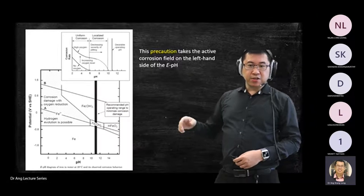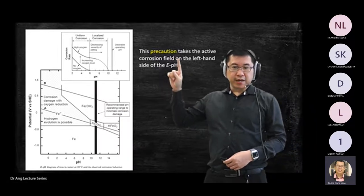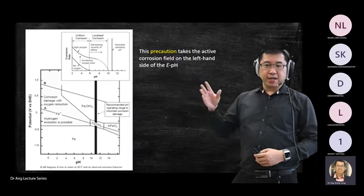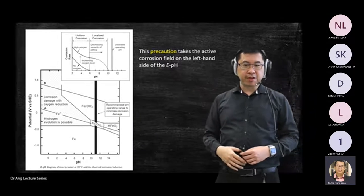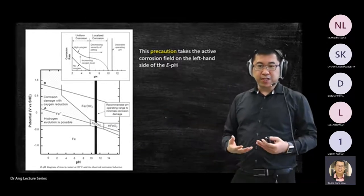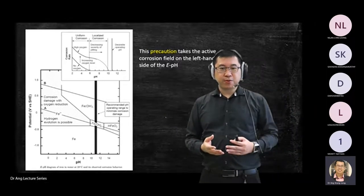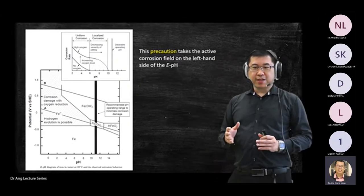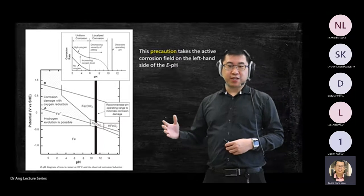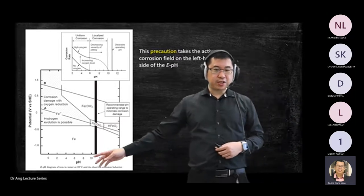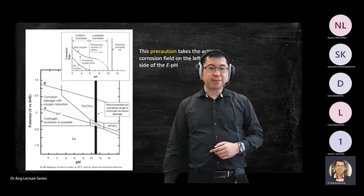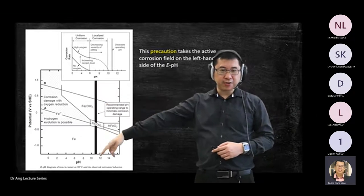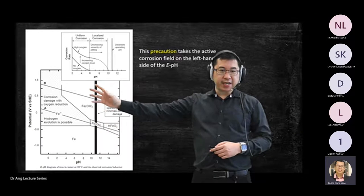The first thing is the area where active corrosion happens. I always start with the pH because pH tells you where corrosion can happen. The more acidic the environment, the more corrosion can occur. So I look at the pH value first, identify where the acidic region is, then check the potential, and from there I know where the active corrosion site is.